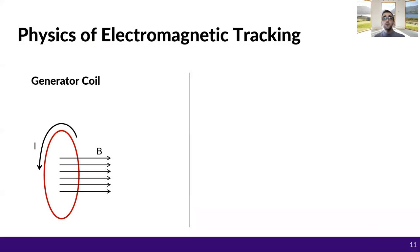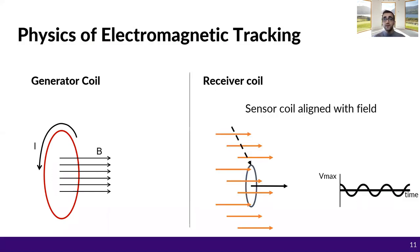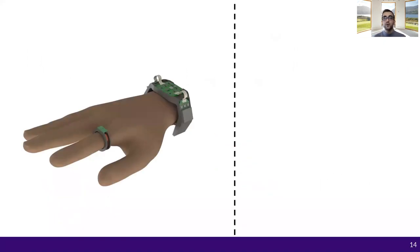If the receiver coil is aligned with the field, you measure the maximum voltage. If the receiver coil is orthogonal to the field, you measure nothing in the receiver coil.